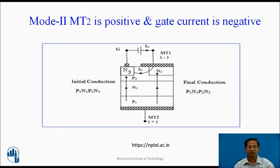Mode 2: MT2 positive, gate current is negative. When MT2 is positive, P1-N1 is forward biased, P2-N3 is forward biased, and P2-N1 is reverse biased. The gate injects charge carriers into the P2 region, making P2-N1 more forward biased. Initially the current flows through P1, N1, P2, N3, so it acts as a pilot thyristor. When the device conducts, the drop reduces, and the potential of P2 with respect to MT2 is more than with respect to MT1, diverting current from P1-N1-P2-N3 to P1-N1-P2-N2. Finally conduction starts through P1, N1, P2, N3. In this mode, the Triac is less sensitive to gate current, so this mode is not recommended.